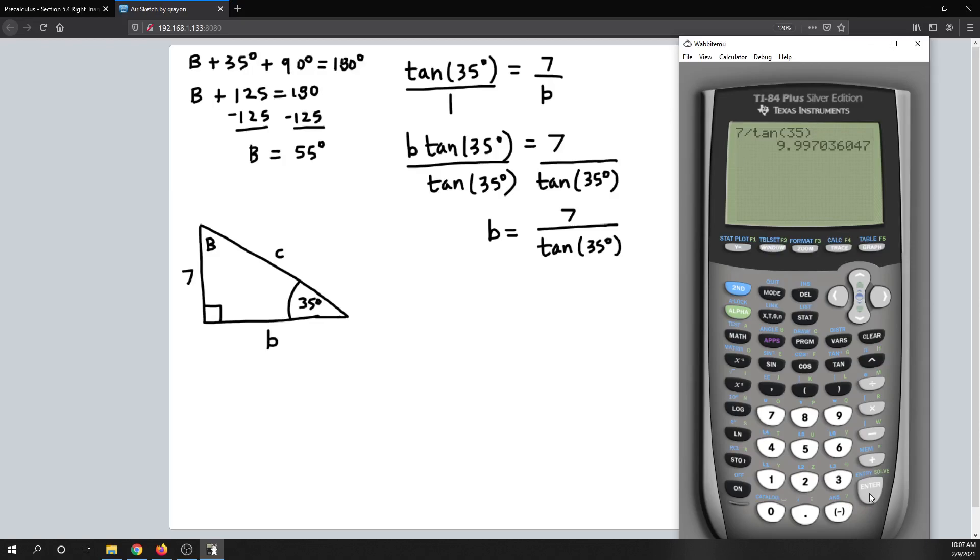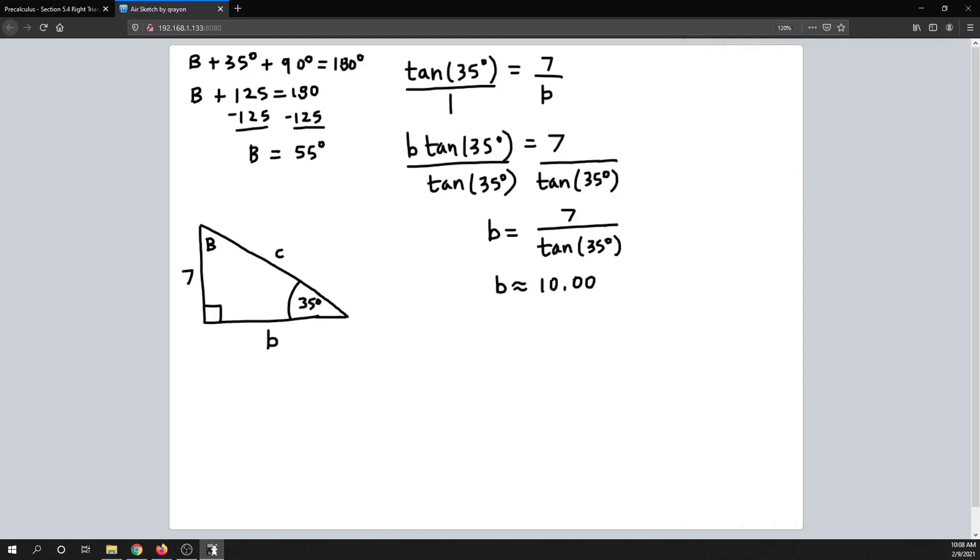All right, and so to two decimal places, b would be—so to two decimal places, that would kick up this digit right here, which is a 7. So that would bump this up to 10.00, like so. Okay, all right. And so now that gives us b.